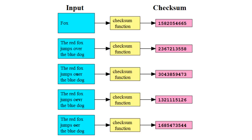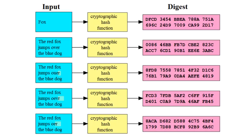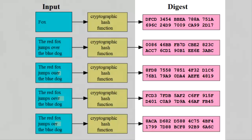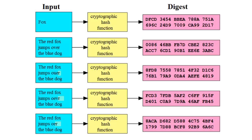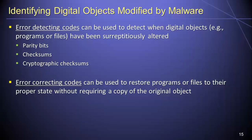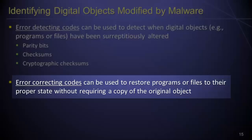The developers of malware are generally quite clever, and many have found ways of modifying programs or files such that they generate the same checksum value as the unmodified version, making it appear as if the file has not been altered. For this reason, a cryptographic hash function can be used to generate a checksum value that has an extremely low probability of being duplicated after a file has been modified. It is also important to note that, under certain circumstances, error correcting codes can be used to restore programs or files that have been surreptitiously altered to their original state without requiring a clean, unmodified copy of the original object.